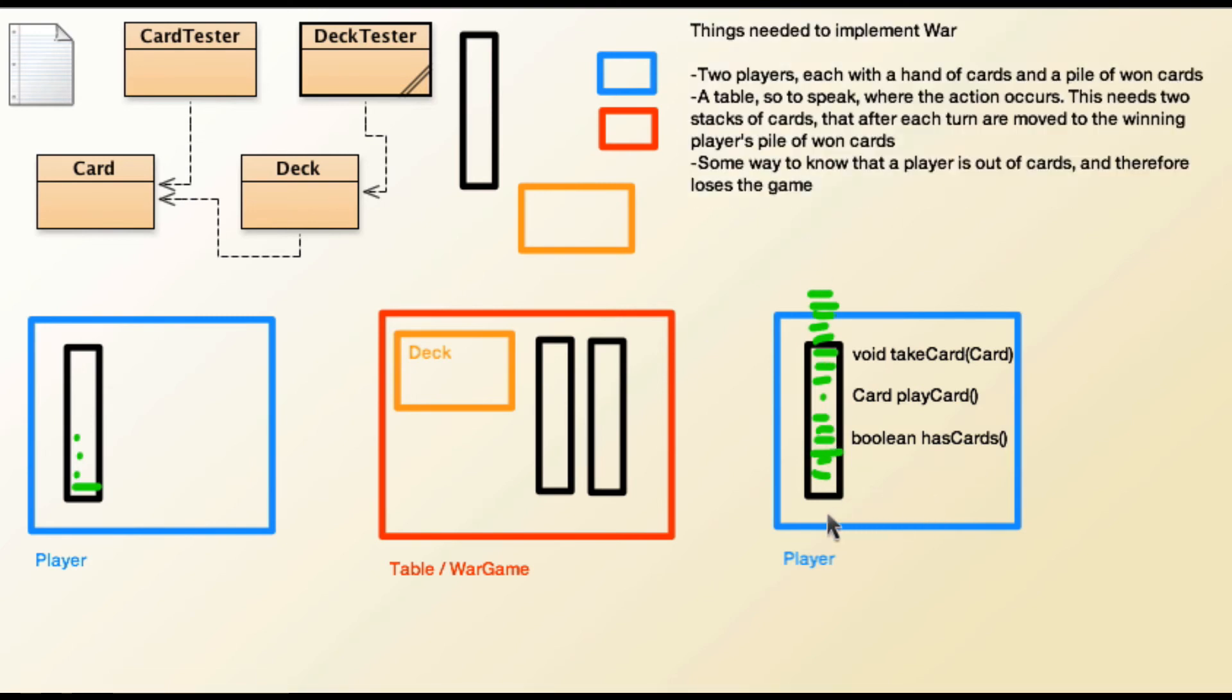Because remember, we can't, because the array lists are private, we can't check their size from over here. So we need an accessor method that will return how much of the array list is actually, whether there's anything in the array list, what its size is.